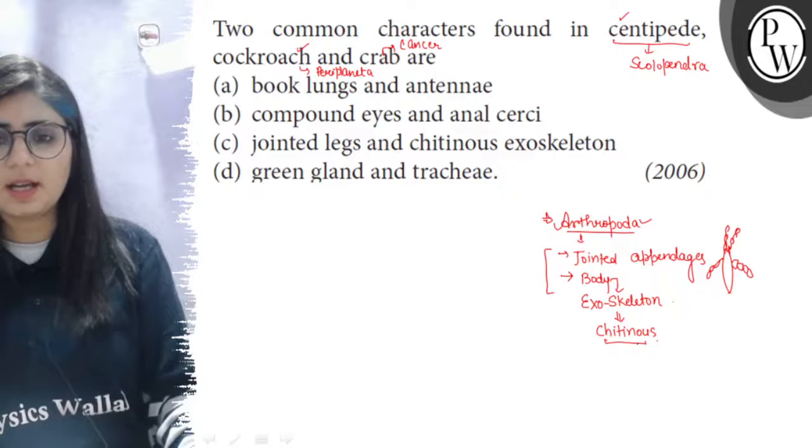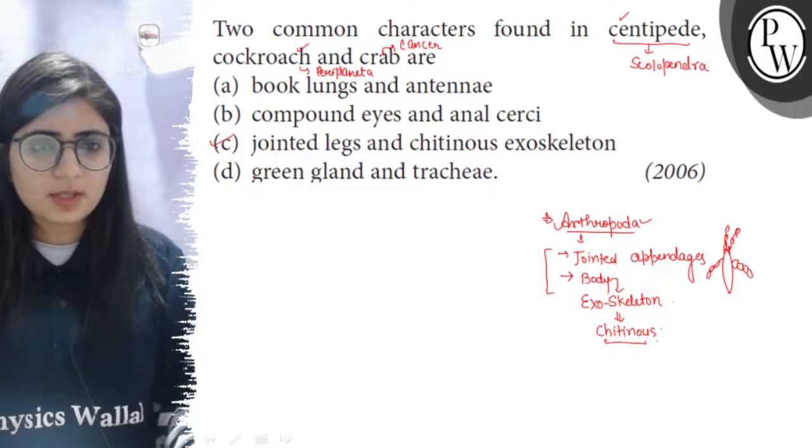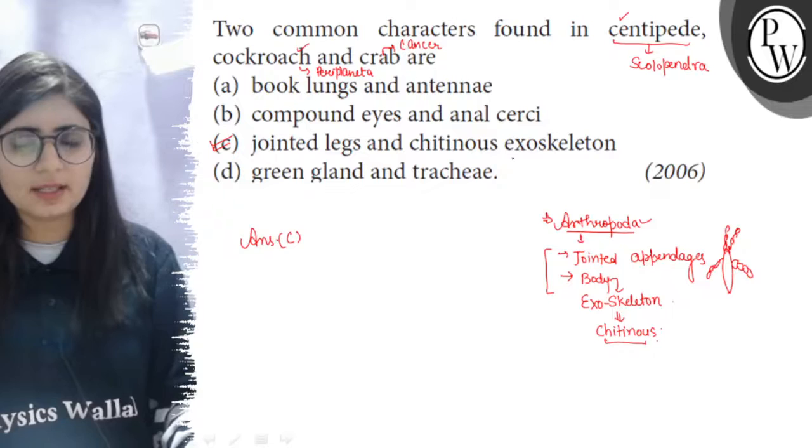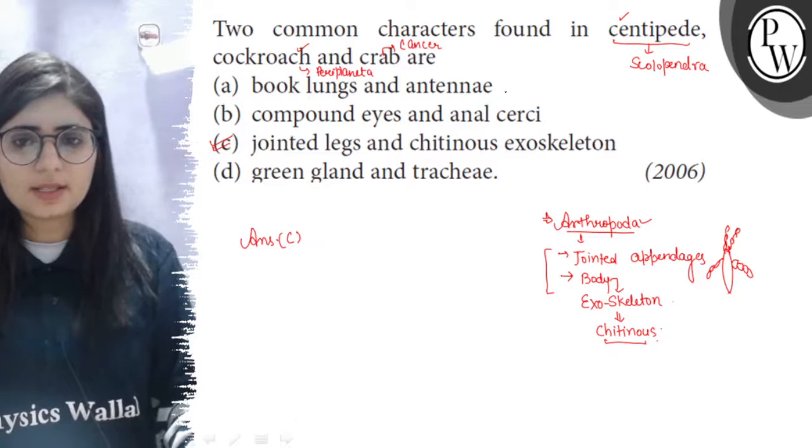So, if we look at the options, then third option is correct - means option C - because the common features given here are jointed legs and chitinous exoskeleton. But if we move further, then book lungs and antennae, so it is incorrect.